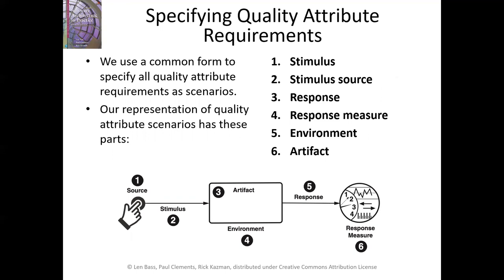One way to deal with overlapping concerns and non-testable requirements is to use the quality attribute scenario. Something is going to cause an event — we have the stimulus causing an event and a response to that stimulus, and our measurement of that response determines whether the quality attribute was achieved. For example, if our requirement is 99% availability — 99% uptime for the system — then when there is a failure, we can measure how long the system is down. If the system is up for less than 99% of the time, it's not meeting the requirement; if it's up for more than 99%, we're satisfying the quality attribute.